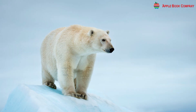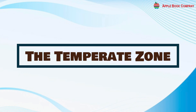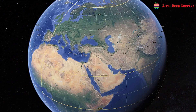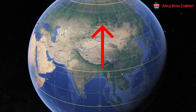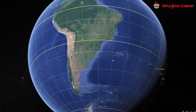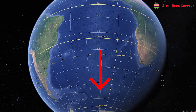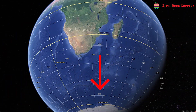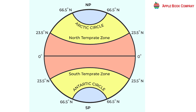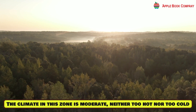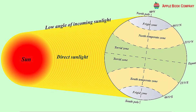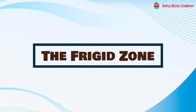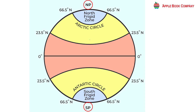The Temperate Zone. In the northern hemisphere, the Temperate Zone extends from the Tropic of Cancer to the Arctic Circle. In the southern hemisphere, it extends from the Tropic of Capricorn to the Antarctic Circle. They are called the North Temperate Zone and the South Temperate Zone respectively. The climate in this zone is moderate — neither too hot nor too cold — and it receives slanted sunlight.